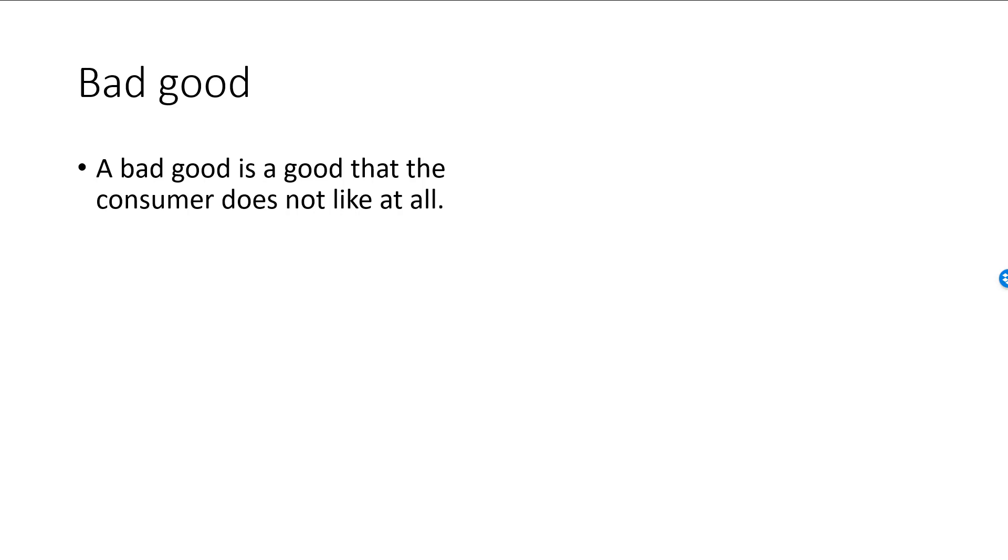For a bad good you are actually willing to give up a little bit of the other good, in order to reduce the quantity of the bad good. For example, say that you have 4 cookies and listen to 4 hours of banjo. 4 cookies and 5 hours of banjo would then be worse. However, a compensation of an additional cookie might precisely make up the additional hour of banjo, making you indifferent between 4 cookies and 4 hours of banjo, and 5 cookies and 5 hours of banjo.